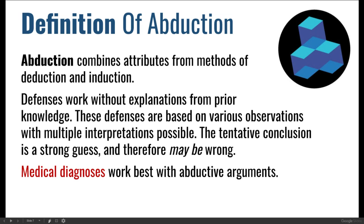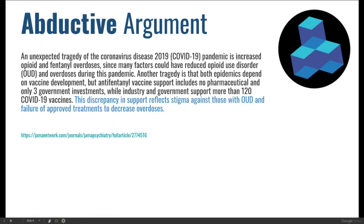Another thing to keep in mind as far as medicine is concerned: there's more than one way to cure an issue. You have to look at the individual in front of you and see what possibilities exist for that one person — that's why this is all about possibilities. There's a brief example here about the coronavirus pandemic: it's focused on overdoses, noting a discrepancy in the information.